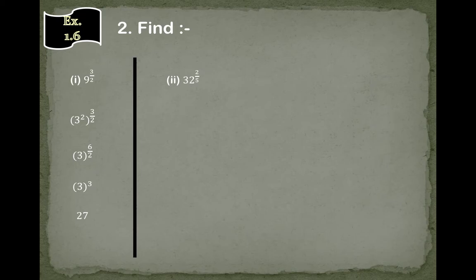Our second question is 32 power 2 upon 5. The power denominator is 5, so we need to make the base power 5. Since 2 power 5 makes 32, we multiply both powers which makes 10 upon 5. This can be divided and the answer is 2. So 2 power 2 makes 4.